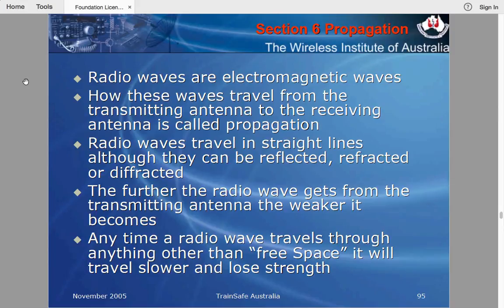How these waves travel from the transmitting antenna to the receiving antenna is called propagation. With your transceiver connected via your transmission line to your antenna, the electrical signals are converted to an electromagnetic wave in the antenna. That electromagnetic wave then propagates by some means to the receiving antenna — sometimes within line of sight, sometimes on the other side of the world.